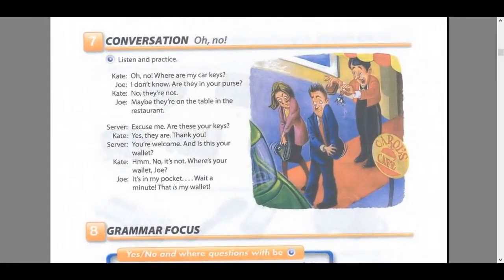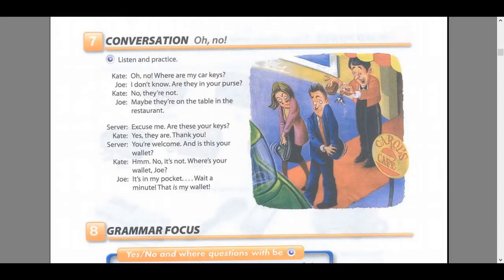Page 11, Exercise 7, Conversation: Oh no! Listen and practice. Oh no! Where are my car keys? I don't know. Are they in your purse? No, they're not. Maybe they're on the table in the restaurant. Excuse me, are these your keys? Yes, they are. Thank you. You're welcome. And is this your wallet? Hmm, no, it's not. Where's your wallet, Joe? It's in my pocket. Wait a minute. That is my wallet.